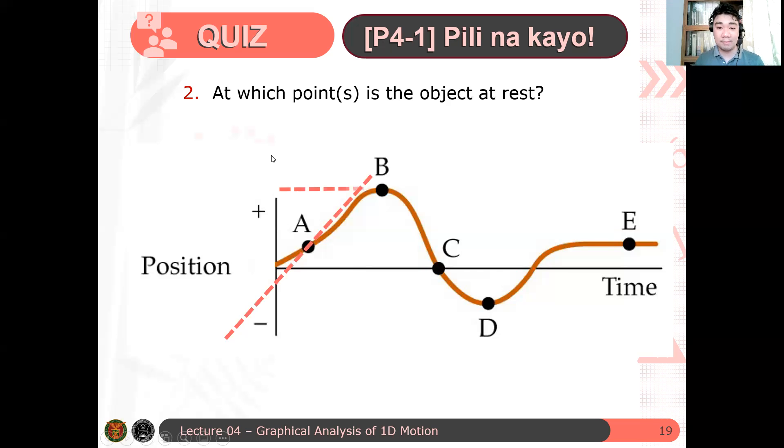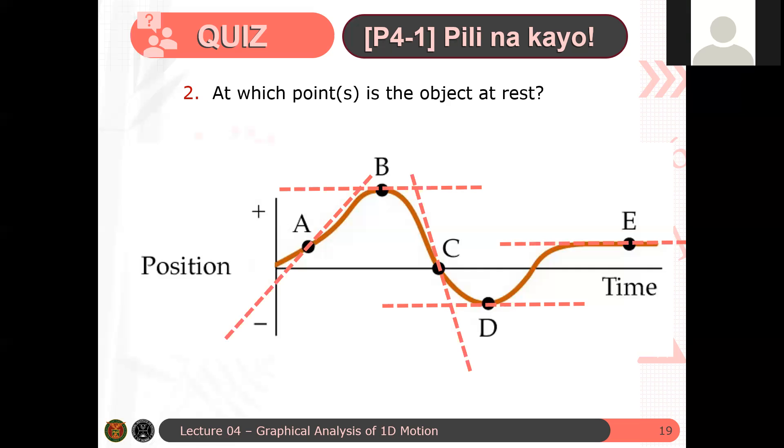For example, A has this slope. B has this slope. C, ganito yung slope nya. D, ganito yung slope nya. And E, ganito yung slope nya. Therefore, which among these slopes is horizontal in nature? Alin dyan? B, D, and E. Yes, exactly. Therefore, the answer for this item is B, D, and E.